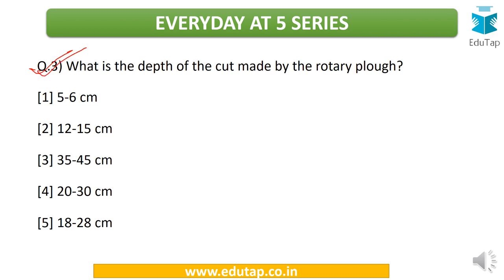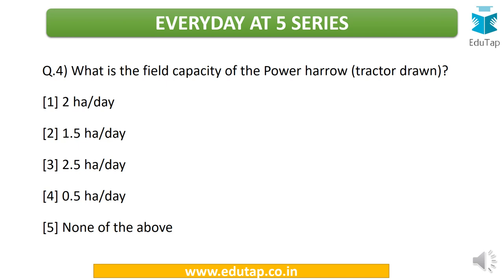The third question: what is the depth of the cut made by the rotary plow? You need to have at least a rough idea of the cuts usually made in the initial process of primary tillage operations, and the rotary plow is also used for primary tillage. The fourth question: what is the field capacity of the power tiller? The options are 2 hectares per day, 1.5 hectares per day, 2.5 hectares per day, 0.5 hectares per day, or none of the above. Try and know the field capacity of all the other important implements as well.